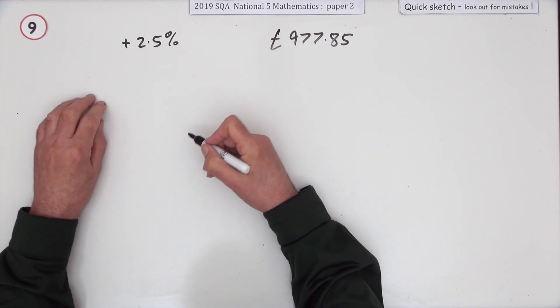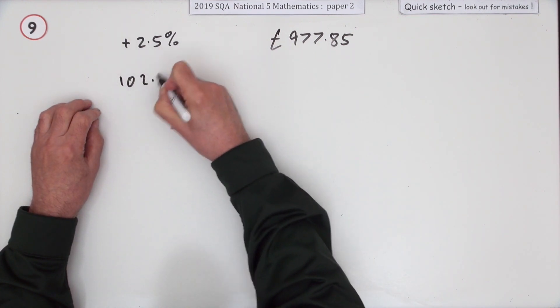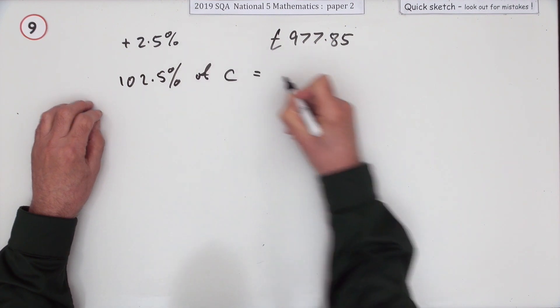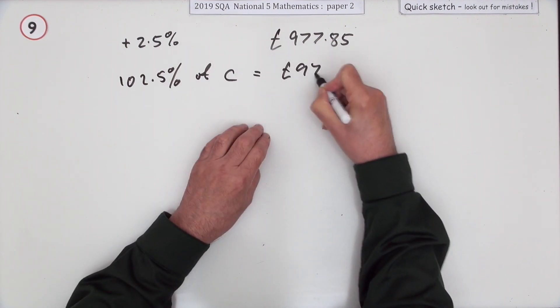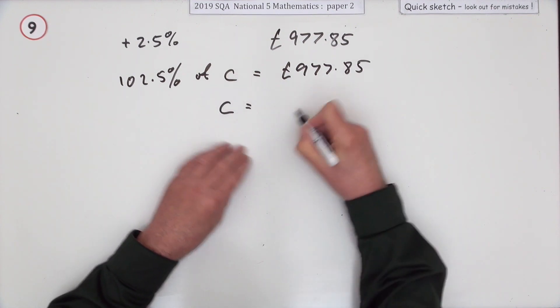You have to think: if it was 2.5 percent extra, that means it was 102.5 percent of the cost, which came to £977.85. So if you want the original cost, it'll be £977.85 divided by that.